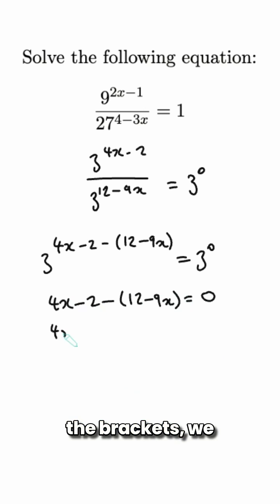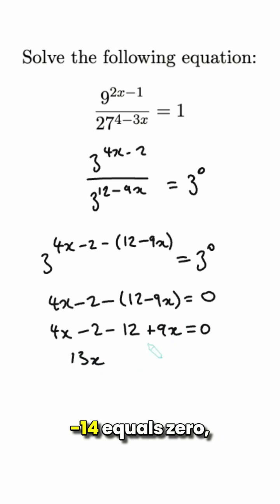Then multiplying out the brackets, we get 4x minus 2 minus 12 plus 9x equals 0. So that gives me 13x minus 14 equals 0, or 13x equals 14.